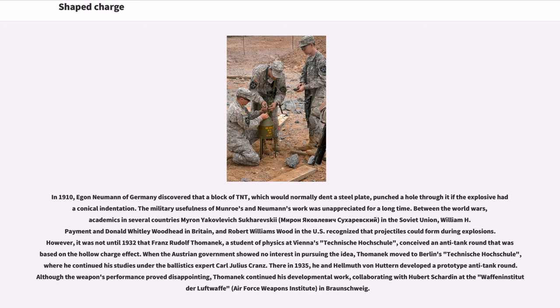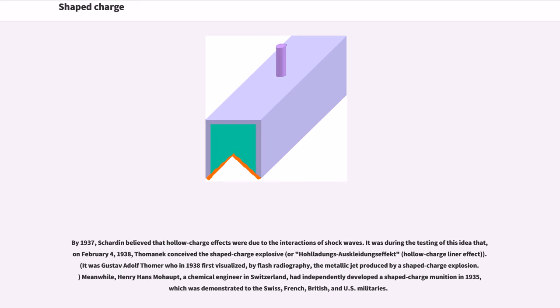When the Austrian government showed no interest in pursuing the idea, Thomanek moved to Berlin's Technische Hochschule, where he continued his studies under the ballistics expert Carl Julius Cranz. There in 1935, he and Helmuth von Huttern developed a prototype anti-tank round. Although the weapon's performance proved disappointing, Thomanek continued his developmental work, collaborating with Hubert Schardin at the Waffen-Institut der Luftwaffe in Braunschweig. By 1937, Schardin believed that hollow charge effects were due to the interactions of shock waves. It was during the testing of this idea that on February 4, 1938, Thomanek conceived the shaped charge explosive, or Hohlladungsauskleidungseffekt, hollow charge liner effect.